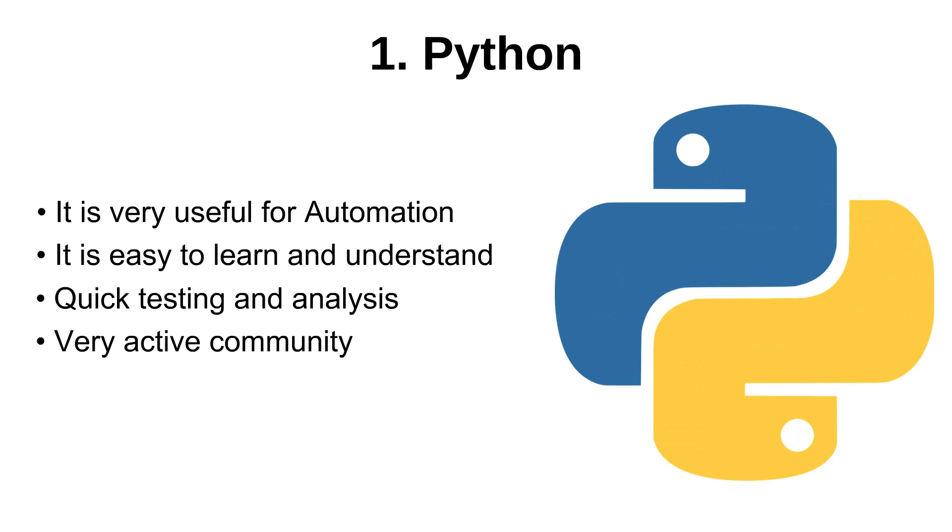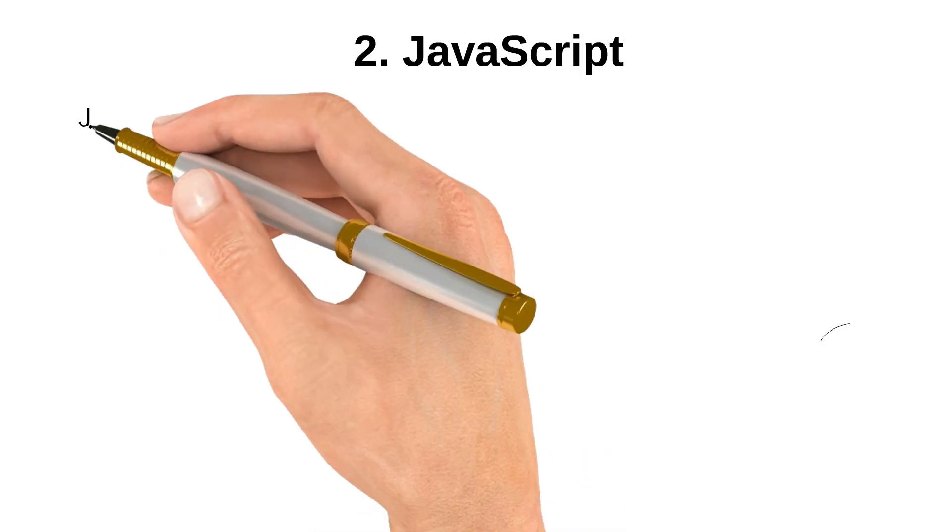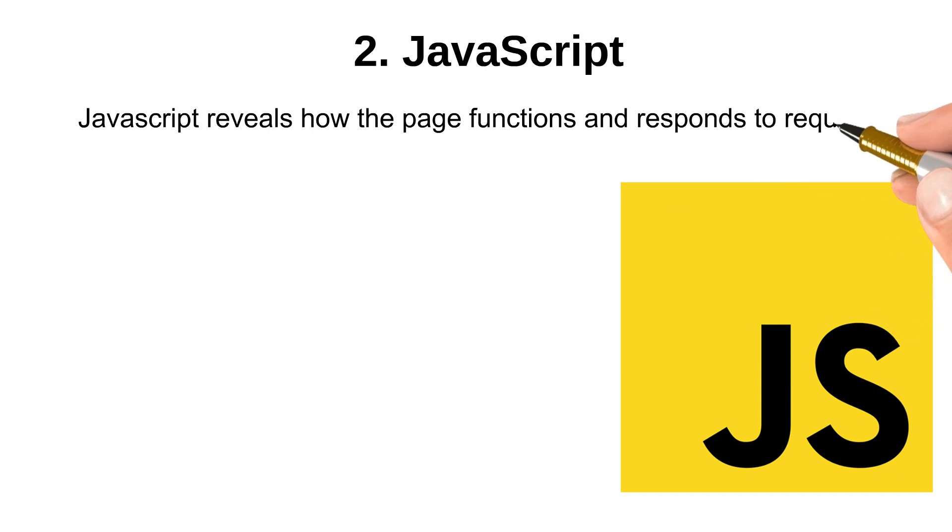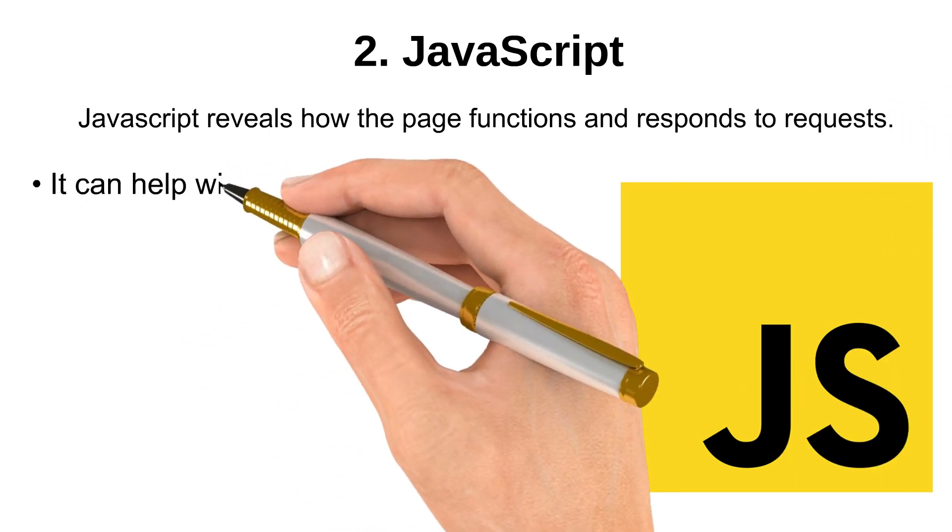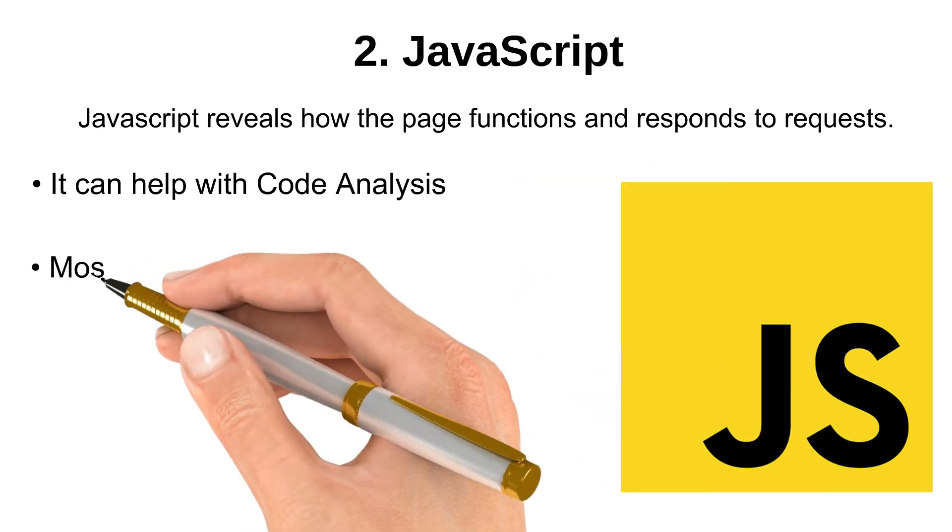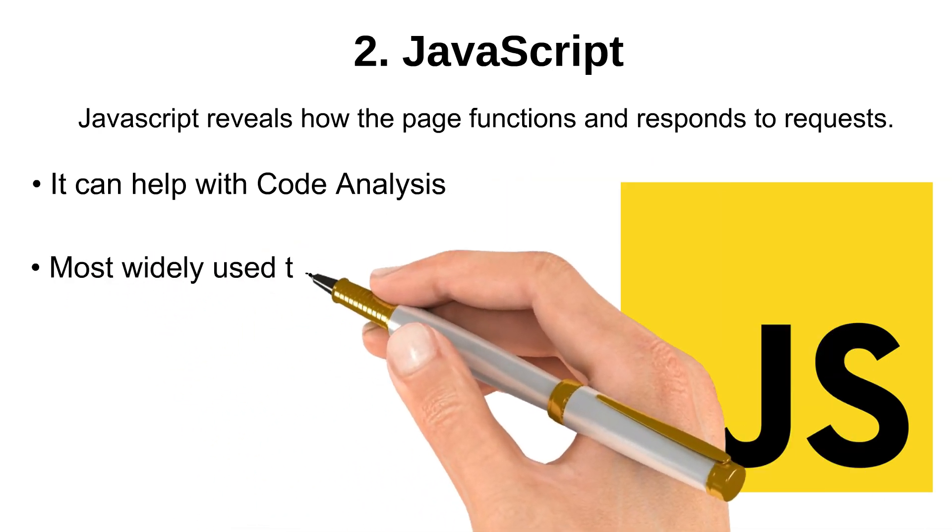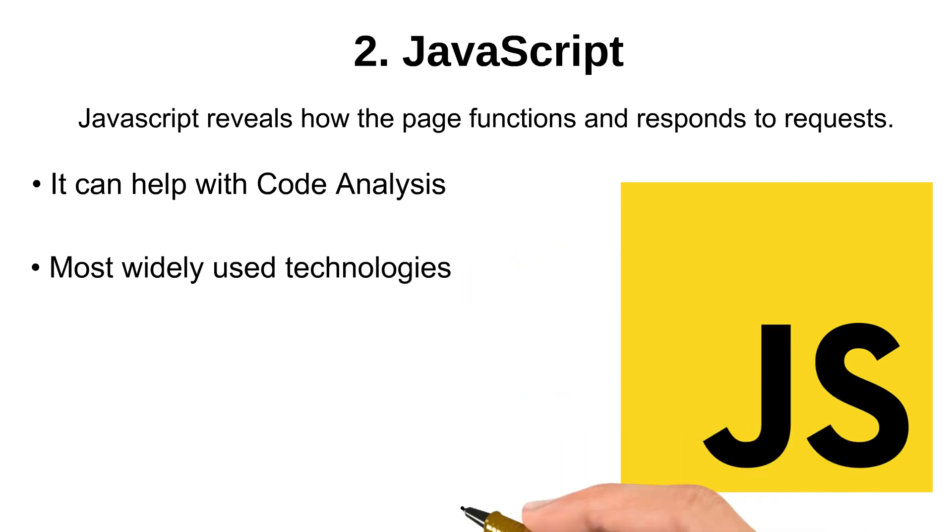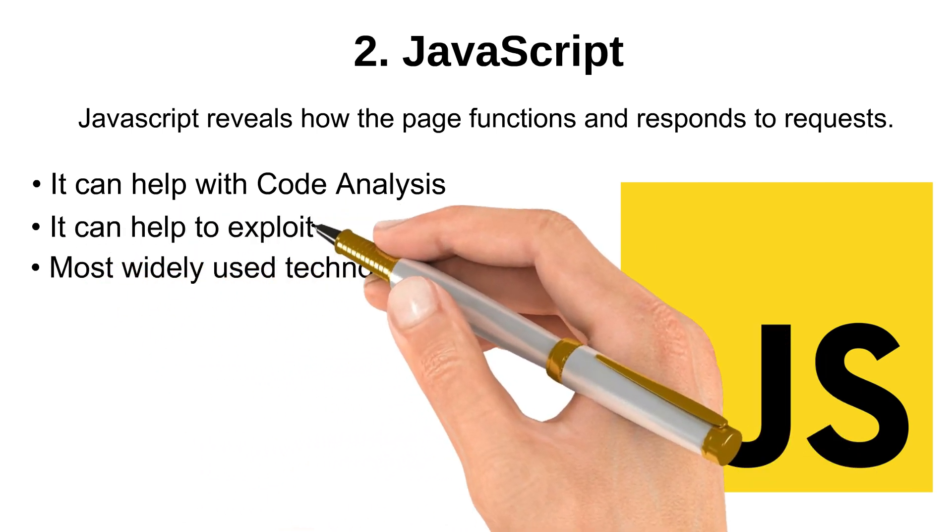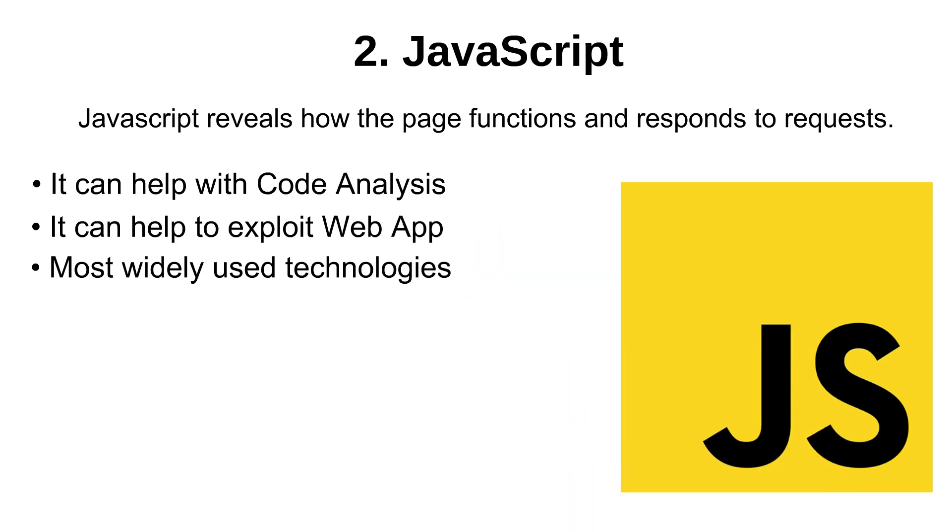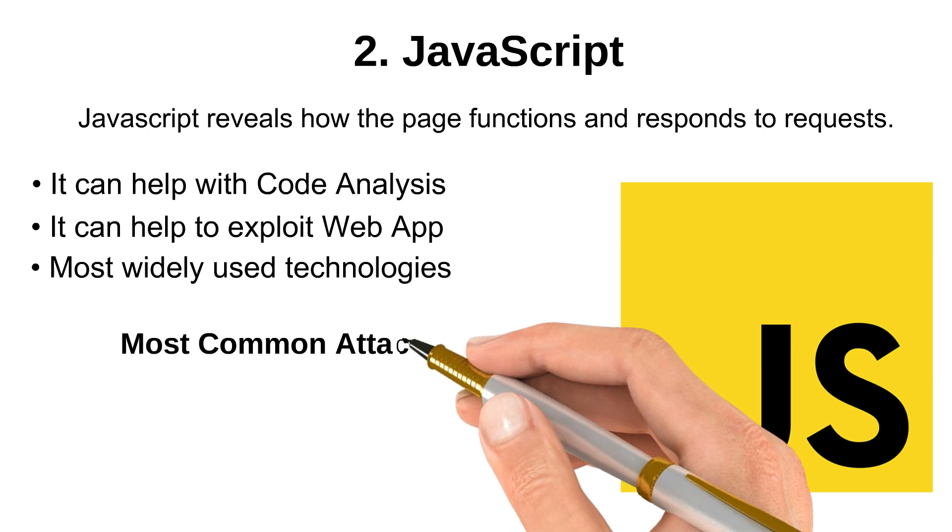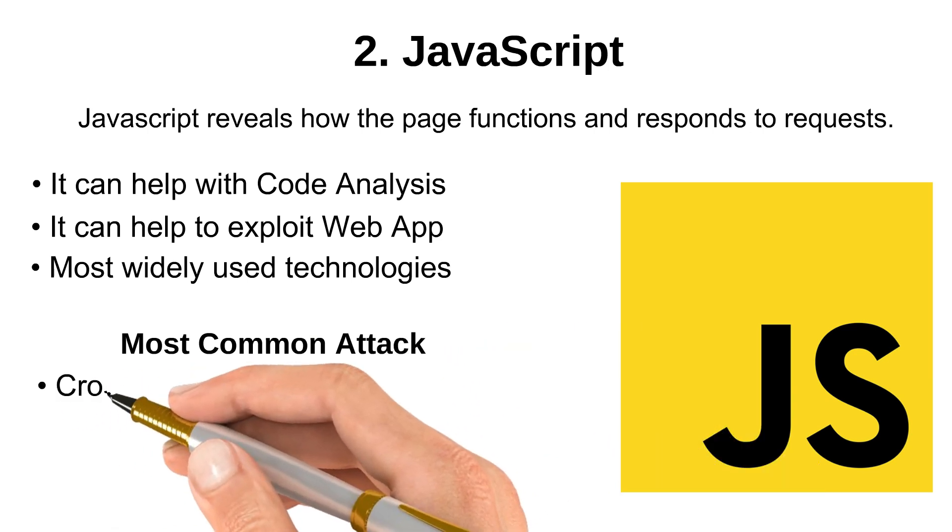Our next language is JavaScript. JavaScript reveals how pages function and respond to requests. It can help with code analysis and is the most widely used technology. You can always find JavaScript code behind any website for specific functions or to perform any specific task. Most common attacks are XSS (cross-site scripting) and CSRF (cross-site request forgery).